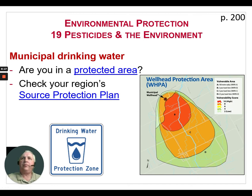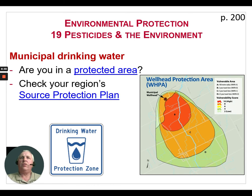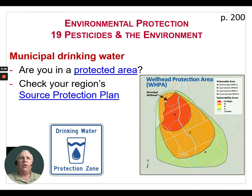Another important consideration: are you in a protected area for municipal drinking water? Some of you may be familiar with the blue signs that indicate you're in a source protection area. On the right-hand side is an example of a map — the spot marked 'A' is where the well head is. You can see different colored areas, and basically the water flows naturally towards that well head. In some cases there may be restrictions on what can take place in those areas, whether it be livestock, pesticide use, or fertilizer use.